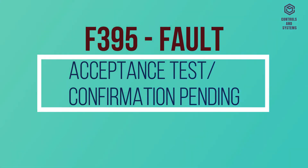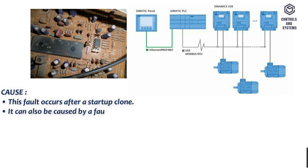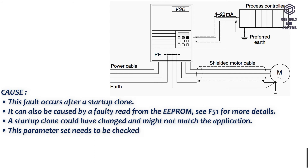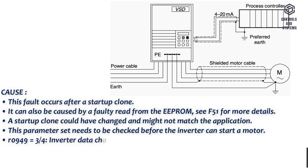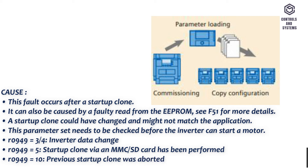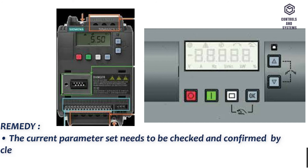F395 Fault: acceptance test confirmation pending. Cause: this fault occurs after a startup clone; it can also be caused by a faulty read from the EPROM — see CF51 for more details. A startup clone could have changed parameters that might not match the application; this parameter set needs to be checked before the inverter can start a motor. R0949=3/4: inverter data change. R0949=5: startup clone via MMC/SD card has been performed. R0949=10: previous startup clone was aborted. Remedy: the current parameter set needs to be checked and confirmed by clearing the fault.